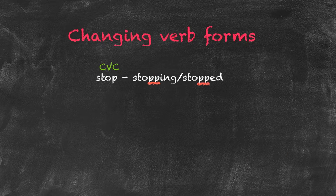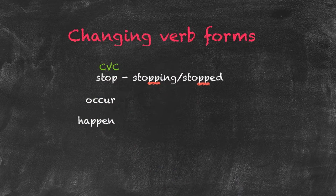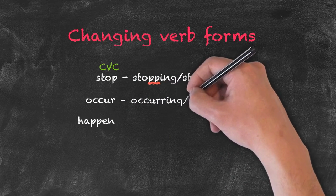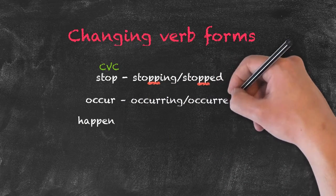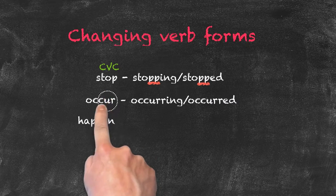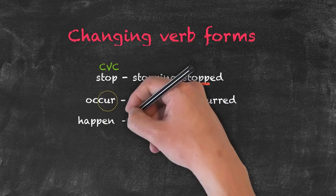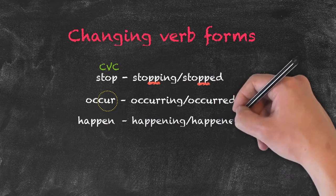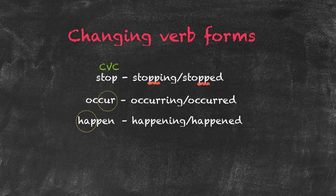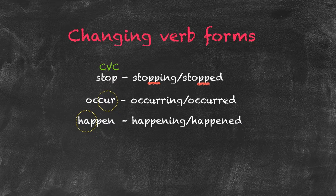In two-syllable verbs such as OCCUR and HAPPEN, we have to focus on where the stress in the verb falls. OCCUR has stress at the end of the word, while HAPPEN has stress at the beginning. For the stress at the end of the word in a consonant-vowel-consonant pattern, we double our final consonant before adding ING and ED.